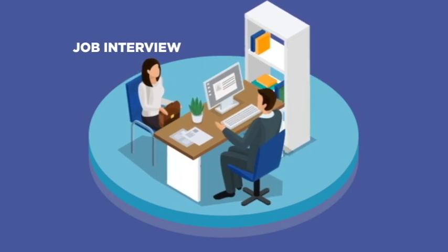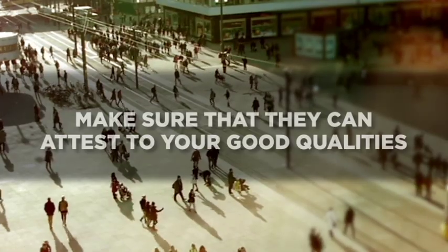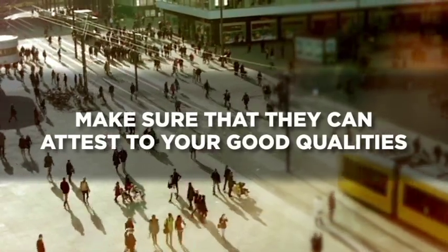It is always better that you have experience related to the position that you are applying for. The character references section lists people who know you and who can give the employer an idea of what kind of person you are. Normally, employers contact these people and ask about you. So it is necessary that you inform people beforehand that you will use them as references. Make sure that they can attest to your good qualities.